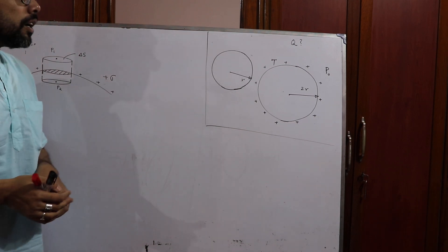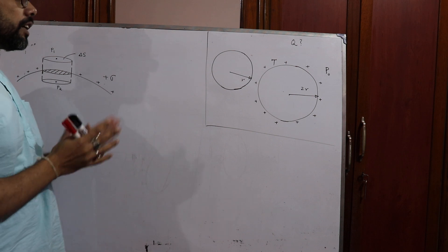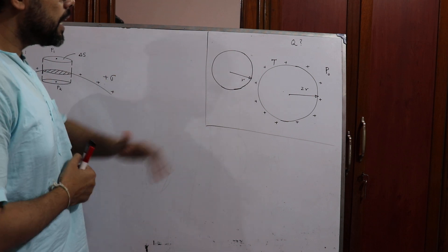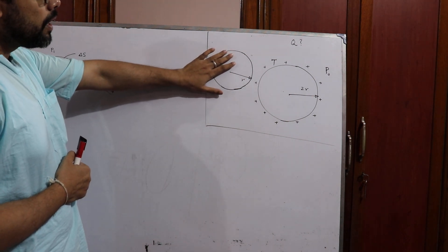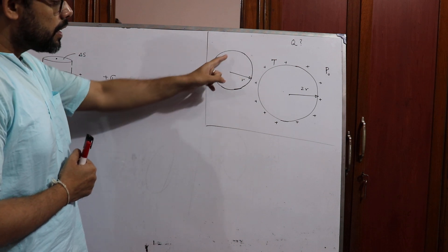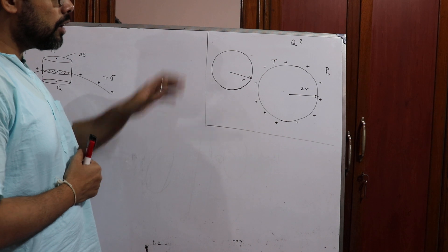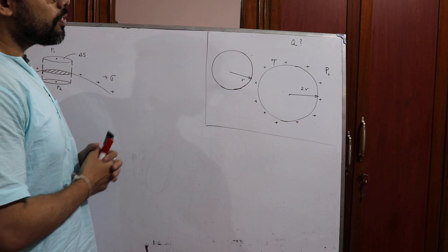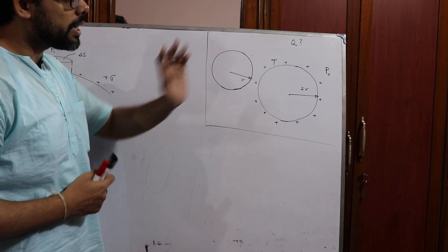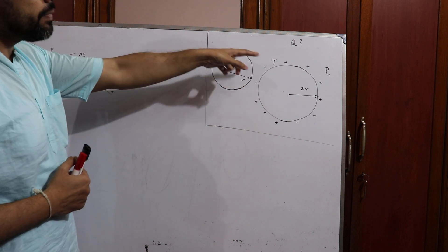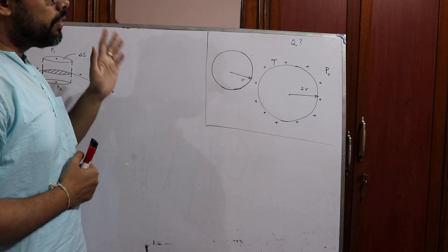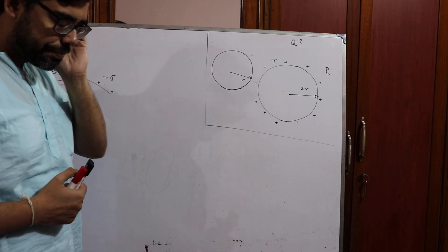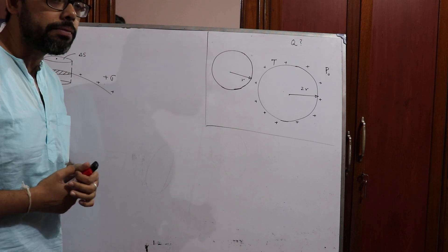Today we will be solving a question based on charge on a soap bubble. There is a soap bubble whose surface tension is T and radius r. A positive charge Q is given to this bubble, because of which it expands and its radius becomes 2r. The external atmospheric pressure is P0. We have to derive an expression for the charge Q provided to this soap bubble.